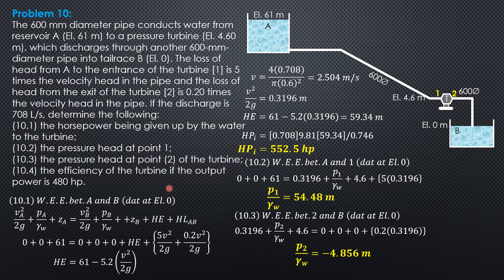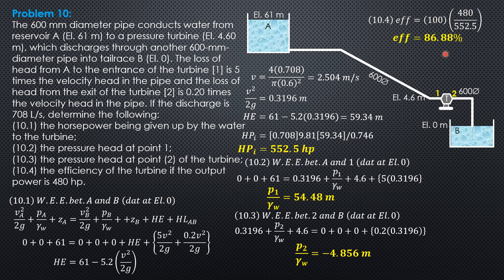Finally, for the efficiency of the turbine, it equals 100% times power output over power input. The horsepower output is 480, so efficiency equals 100% times 480 over 552.5. Efficiency equals 86.88 percent. That's it for this problem on turbines.